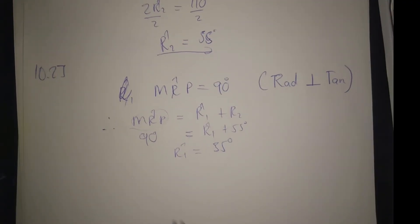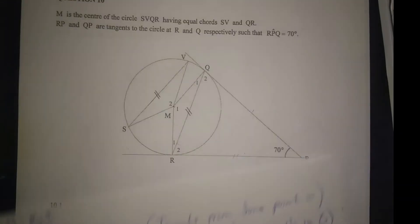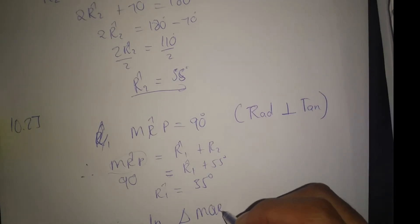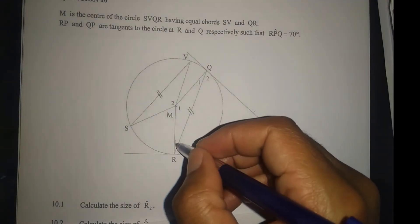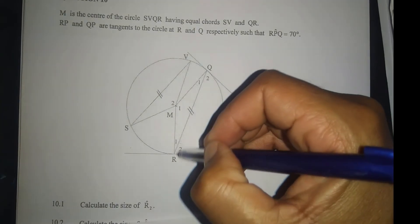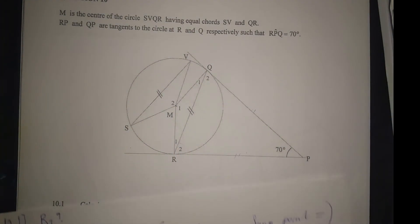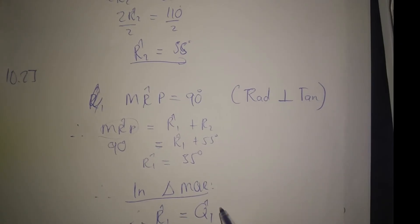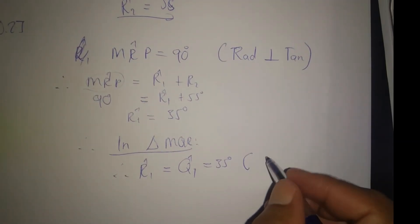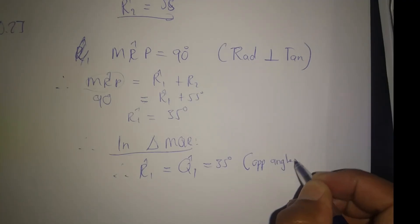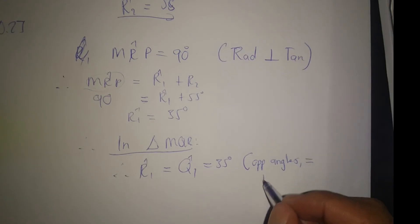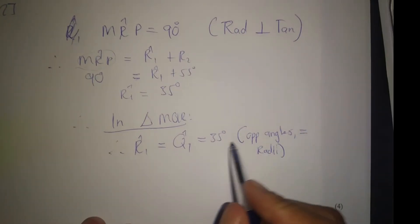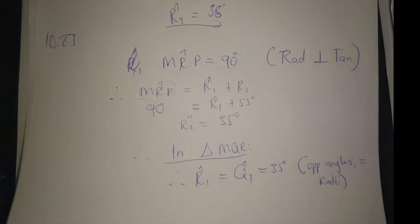Therefore, in triangle MQR, this triangle is an isosceles triangle because of equal radii. Therefore R1 is equal to Q1, which is equal to 35 degrees. The reason being opposite angles equal radii - opposite angles are equal because of equal radius.